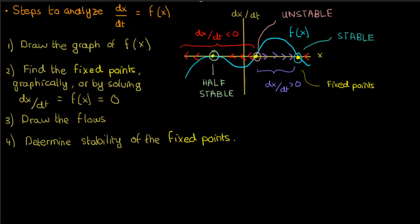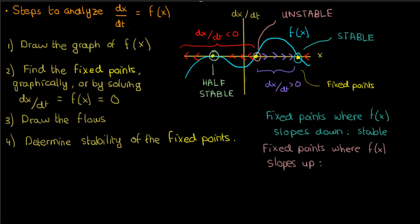Get it? Half stable, half full, they both start with half. Anyway, you might have noticed a bit of a geometric pattern already with the fixed points and their stability. Fixed points that occur when the f(x) graph is sloping downwards tend to be stable, whereas fixed points that occur when the graph of f(x) is sloping upwards are unstable. We're actually going to discuss this in more detail in the next video when I discuss linear stability analysis.